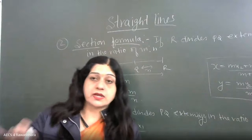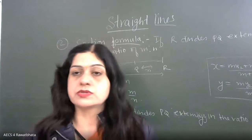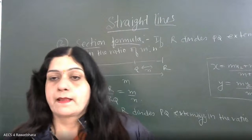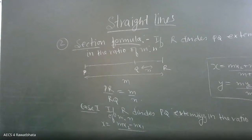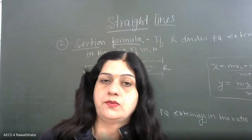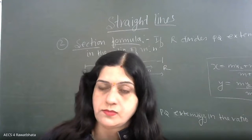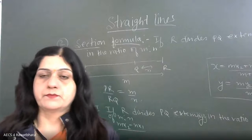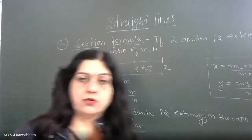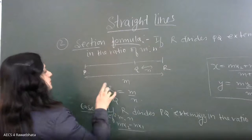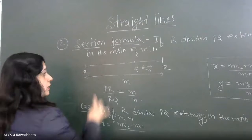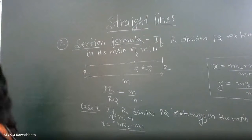Do you remember? This is just repeating what you have already studied. Can you tell me what it was in the externally case? No one remembers? Everyone forgot? Look, what is coming out? M X2 is going here, and total what will come out? M minus N will come out, right? PR is to QR.